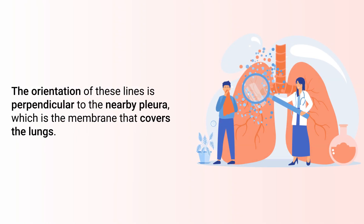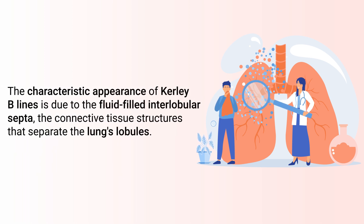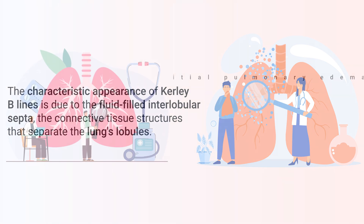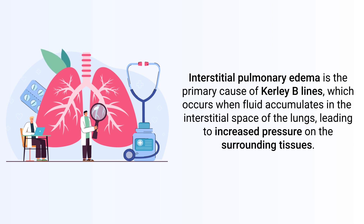The orientation of these lines is perpendicular to the nearby pleura, which is a membrane that covers the lungs. The characteristic appearance of Kerley B lines is due to the fluid-filled interlobular septa — the connective tissue structures that separate the lungs' lobules.